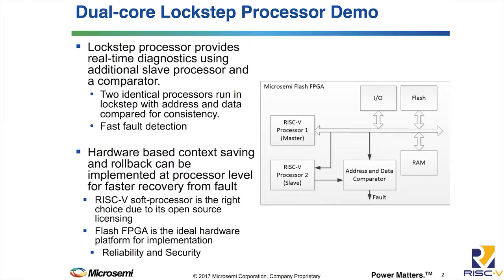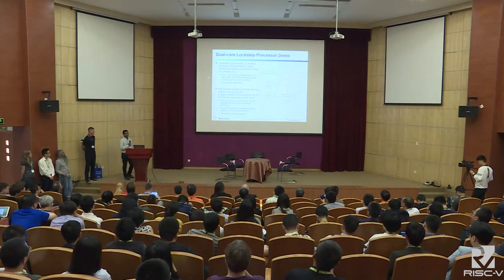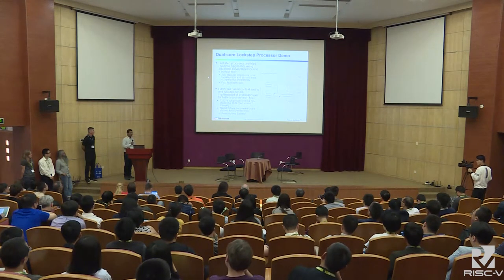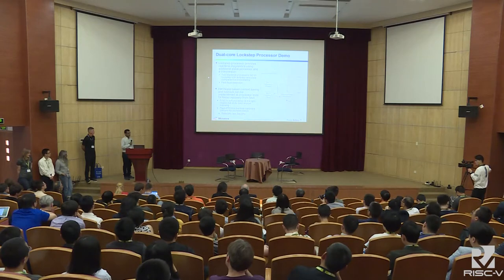Using the system monitor, we can take necessary action like resetting the device or returning it to a safe state. Once we detect a fault, we proceed to rollback. For that, we can use hardware-based context saving and rollback techniques. We believe that RISC-V is the right choice for implementing this hardware-based context saving and rollback, because of its open-source licensing. Using a flash-based FPGA brings additional benefits in terms of reliability and security, making your system suitable for safety-critical applications. Thank you.